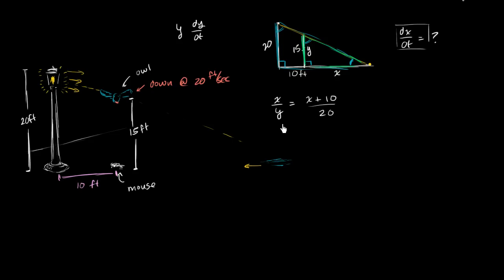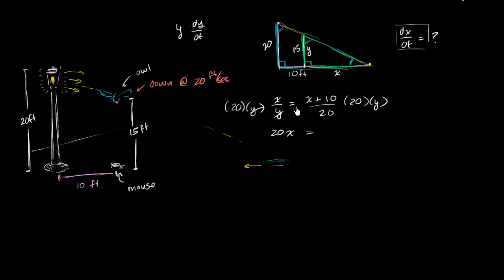Before taking the derivative with respect to t, let me simplify by cross-multiplying. Multiplying both sides by 20 and y, the left-hand side simplifies to 20x, and the right-hand side gives xy plus 10y. Now we have a clean relationship between x and y to differentiate.